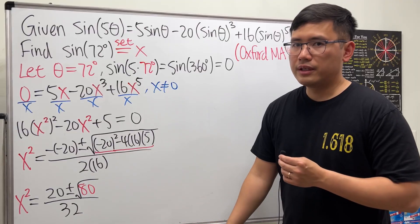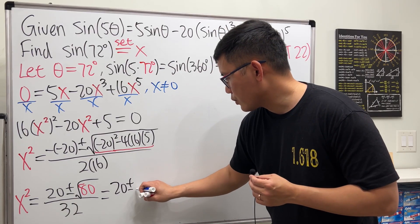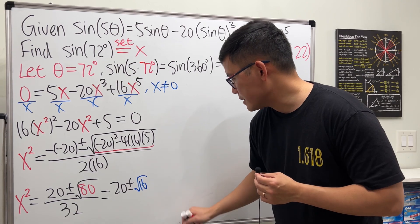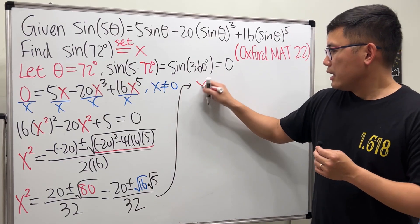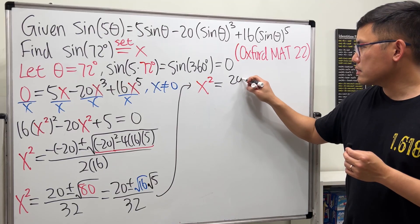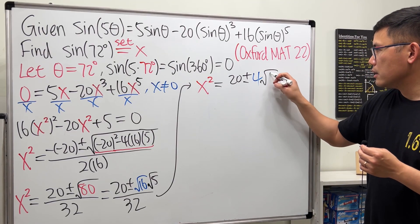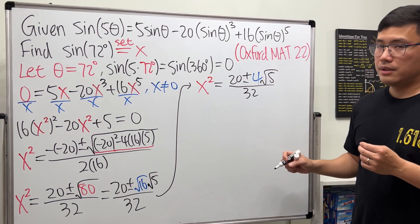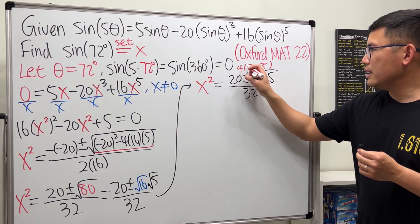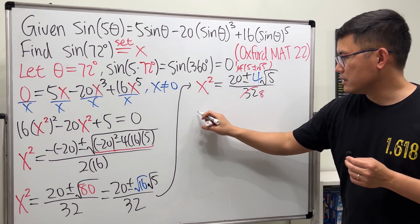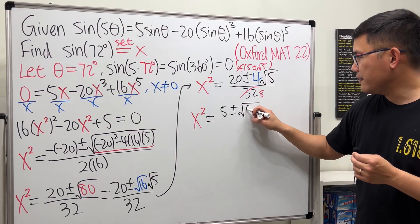So that's under the square root, and then here we have 2 times 16 which is 32. And 80 we can break down as 16 times 5, so this is the same as 20 plus or minus—let's do square root of 16 times square root of 5 over 32. So we get x² equals 20 plus or minus 4√5 all over 32. Now on the top we can factor out 4, so we get 5 plus or minus √5 and also the minus here. And then we can reduce this 1 and 8, so this is x² equals (5 ± √5)/8.